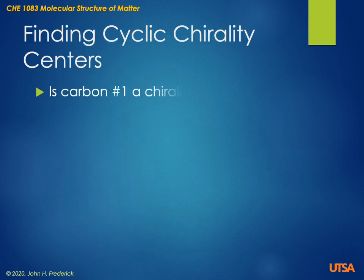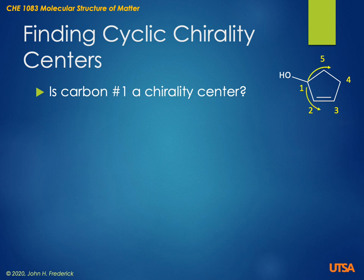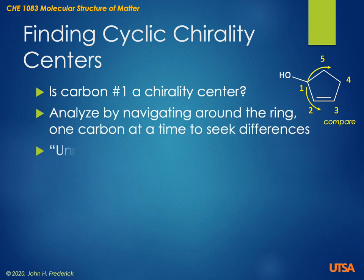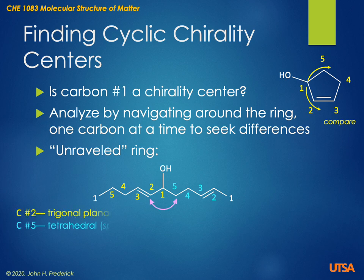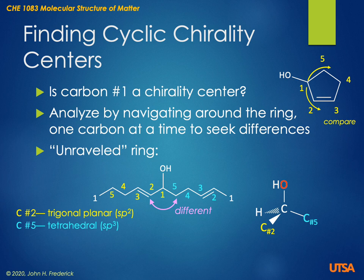So this is what we do. We take this cyclic molecule and begin to unravel it as we go in each direction. We start at the carbon we think is a chirality center and examine each carbon as we move around the ring to determine if any differences arise. What I've done is put carbon one in the center, and then gone around the ring in each direction, getting back to one at the end. We start at carbon one, and as we move around the ring at the very first stop, we find that carbon number two is a trigonal planar center, and carbon number five is a tetrahedral carbon. These are clearly different.